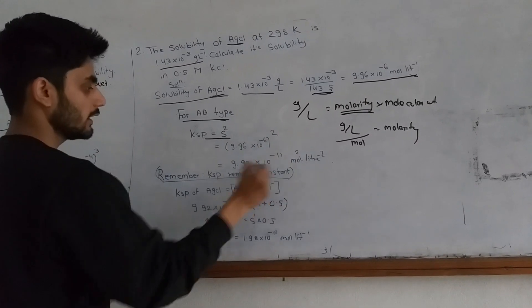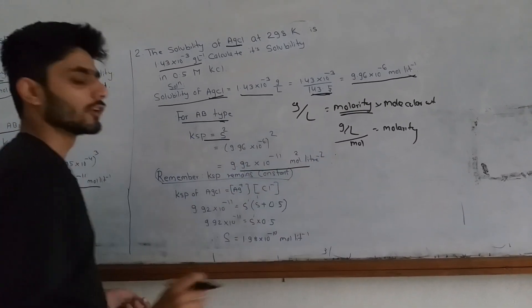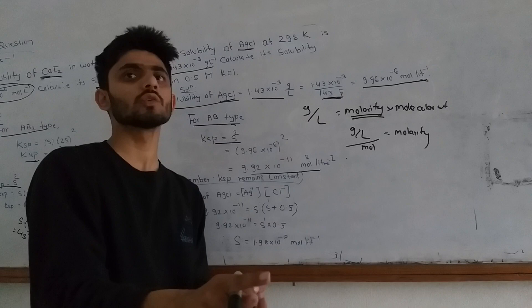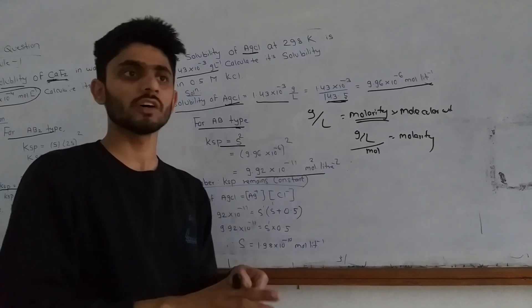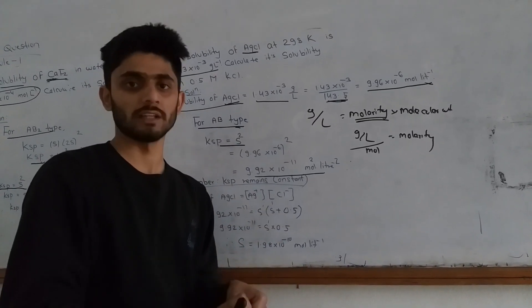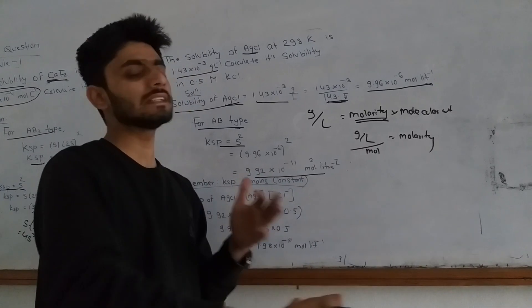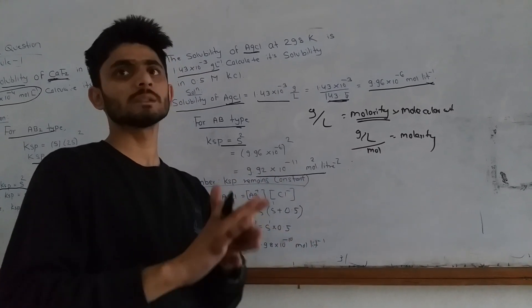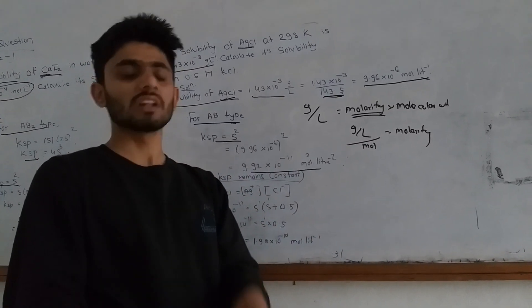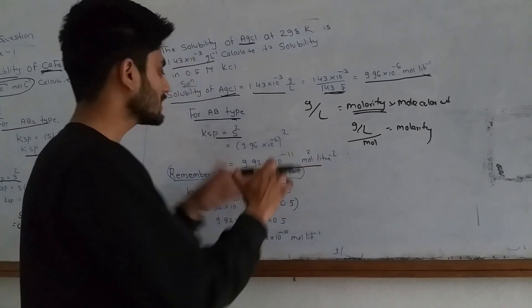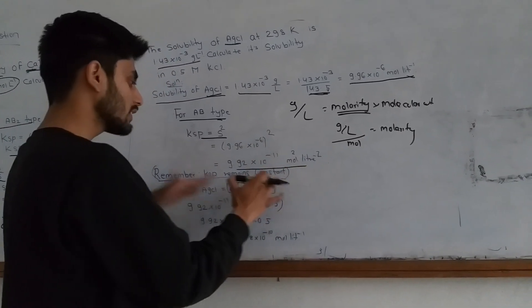For this AB type, KSP is equal to S squared. To understand KSP, it is constant unless the temperature is increased. When the concentration changes, the value of KSP remains constant unless the temperature changes.